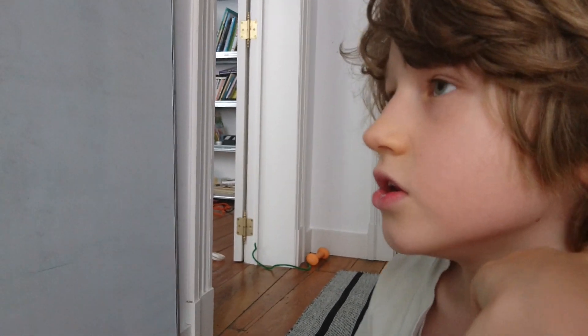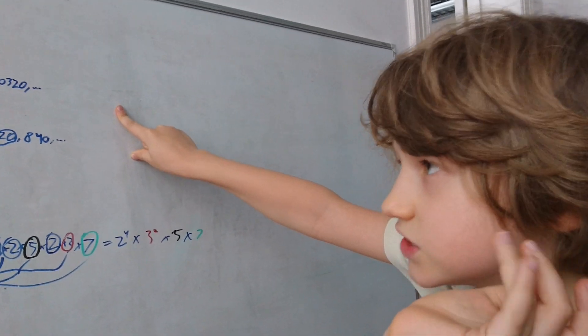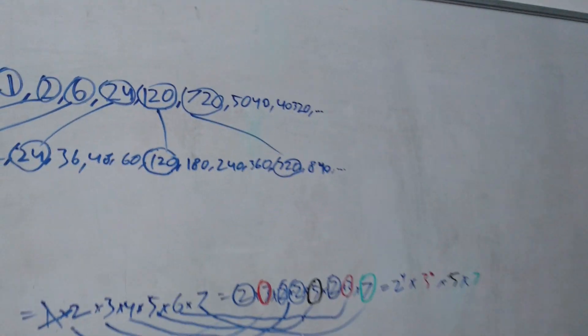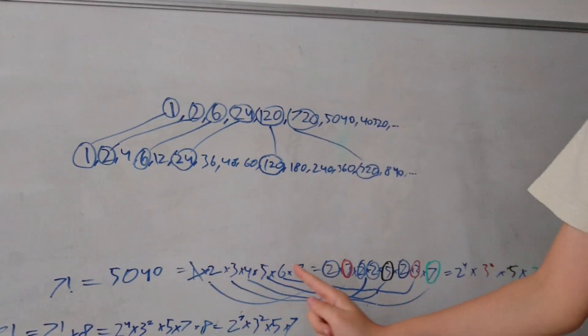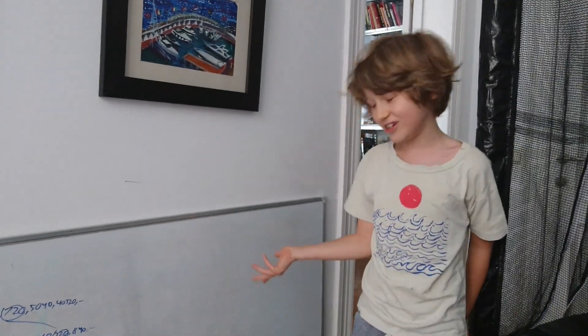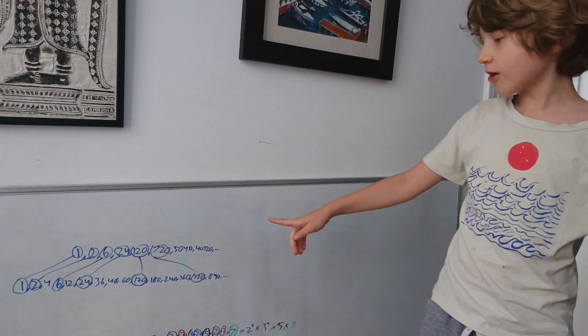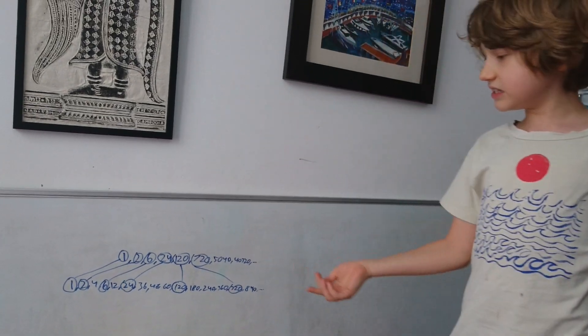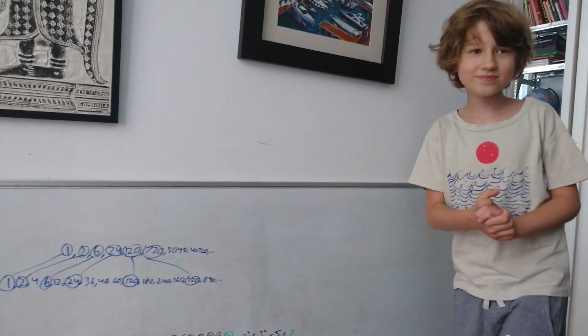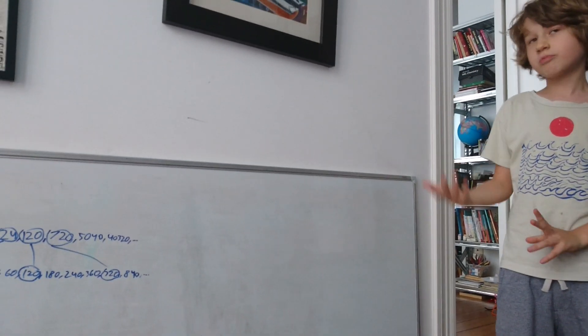Do numbers further in this list have more divisors than numbers closer? Well, of course, because you're adding more of these, which means you're adding more divisors. By definition, numbers further in this list have more divisors than numbers that are closer. If I'm right, that finishes the proof.